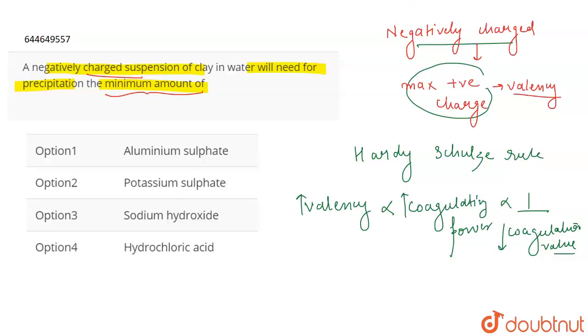If we talk about aluminum sulfate, it is Al2(SO4)3. What is the charge on the cation here? It is Al+3. In potassium sulfate, K2SO4, the cation is K+1. In sodium hydroxide, NaOH, the cation is Na+. And hydrochloric acid, HCl, has the cation H+.